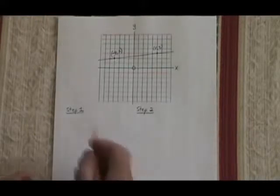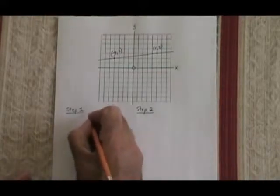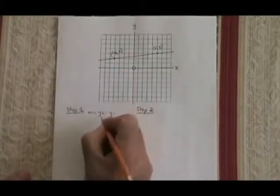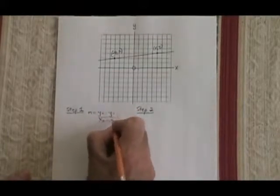Step 1 is find the slope. You use the slope formula, m equals y2 minus y1 over x2 minus x1.